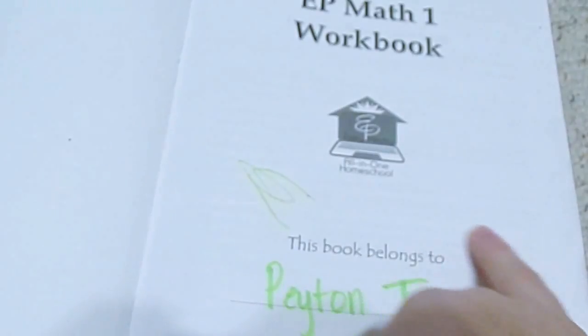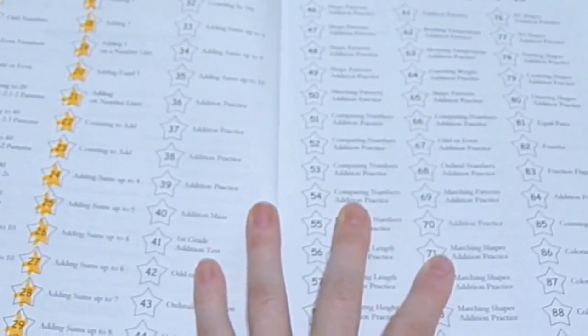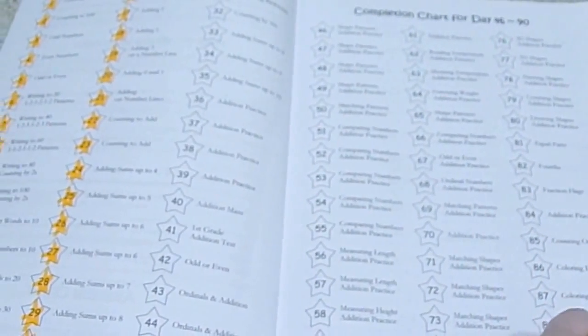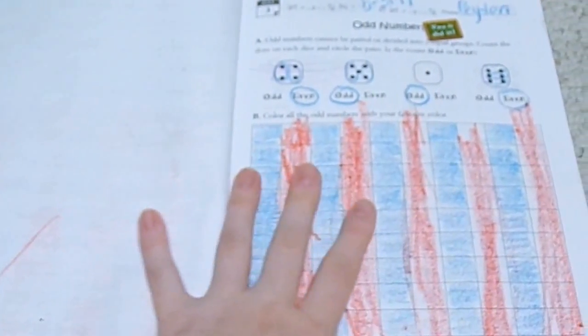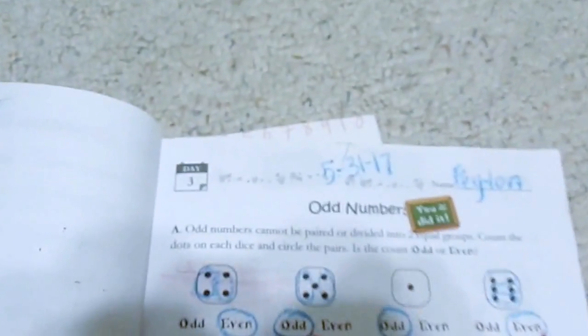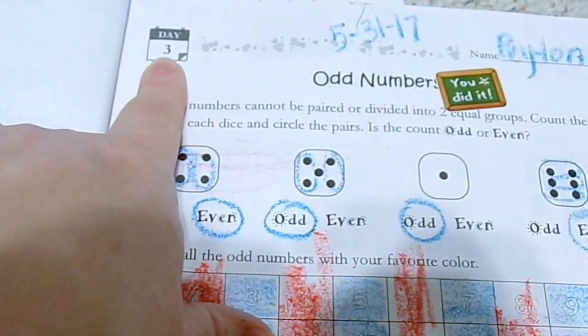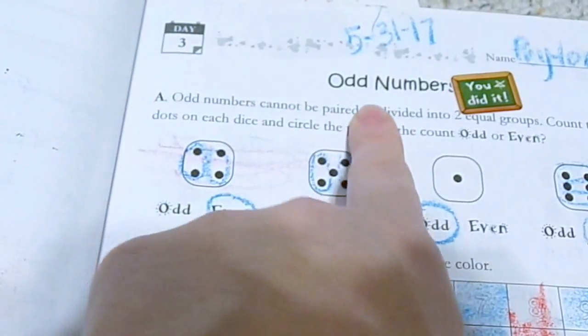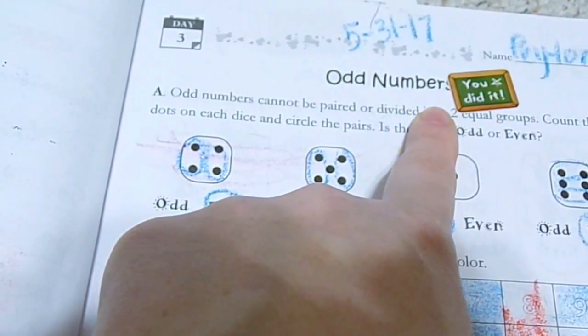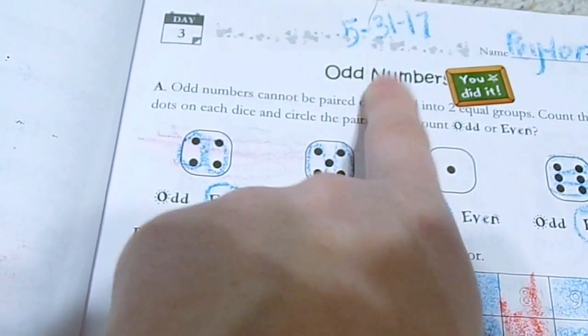This is inside the math workbook. It has a completion chart which we obviously weren't very good at filling out. Then you have your worksheets by day. So day three, your day will be up here in the left-hand corner and what your topic is will be at the top, and then you will have your worksheet to do.